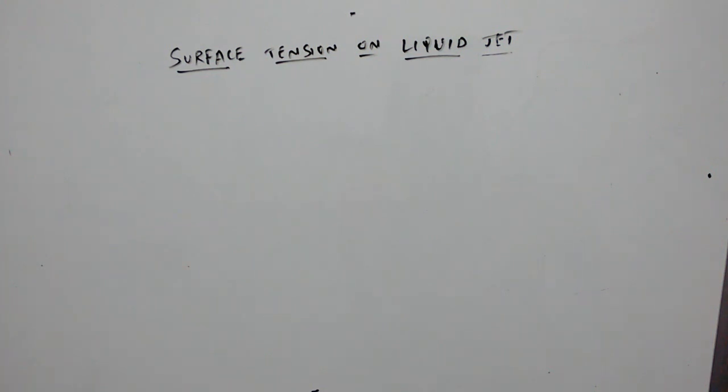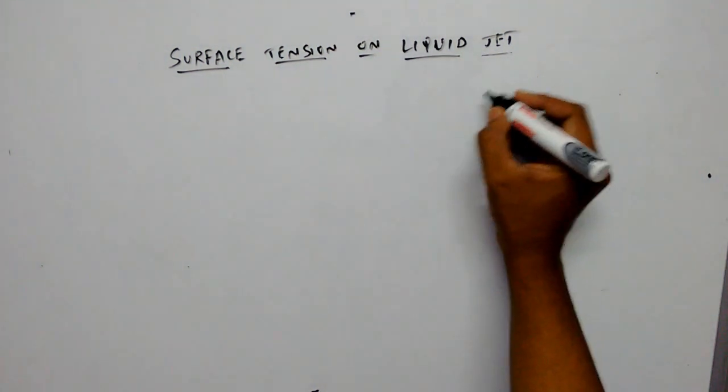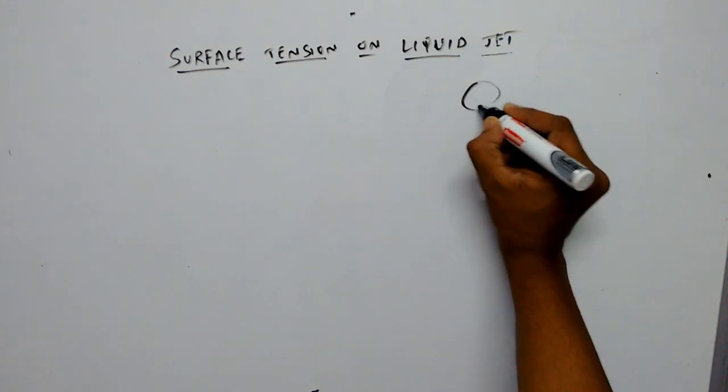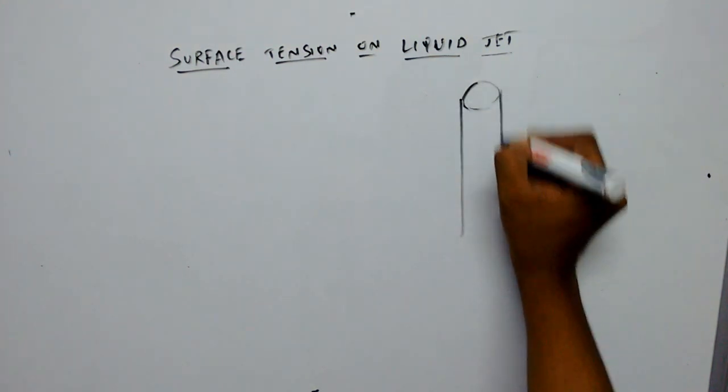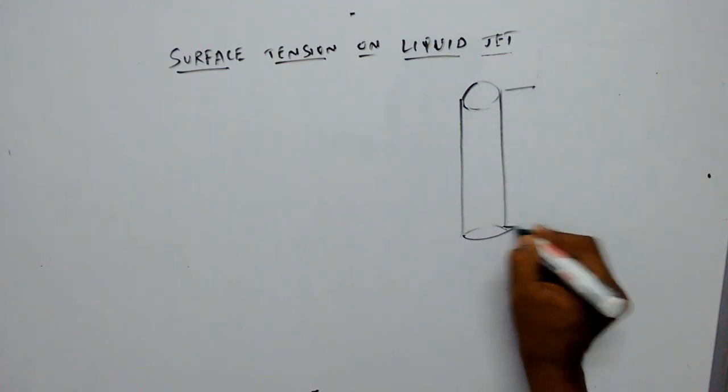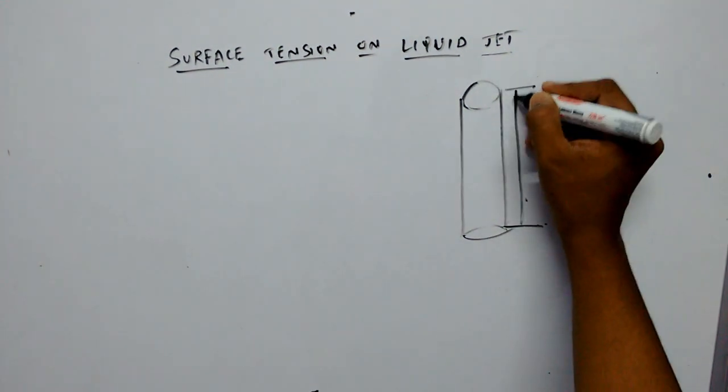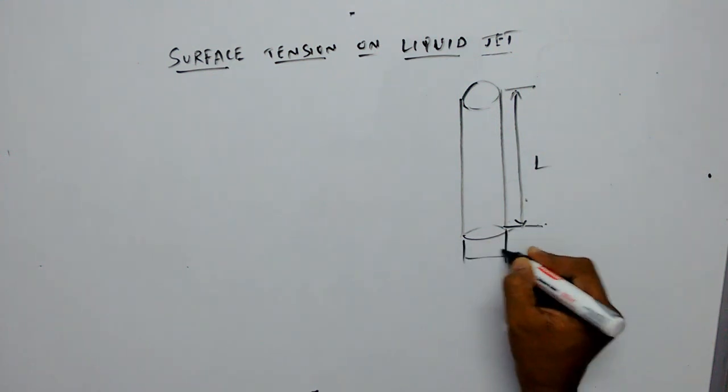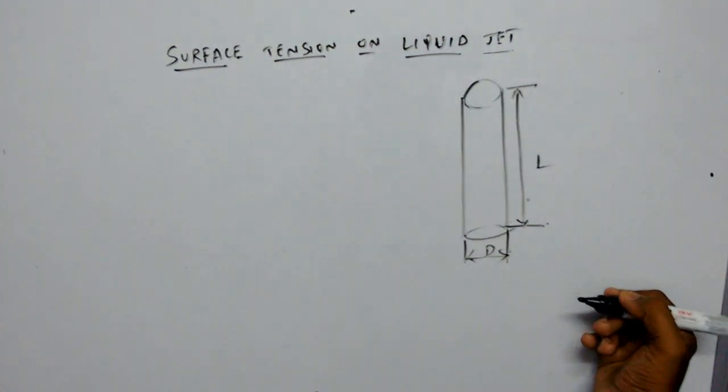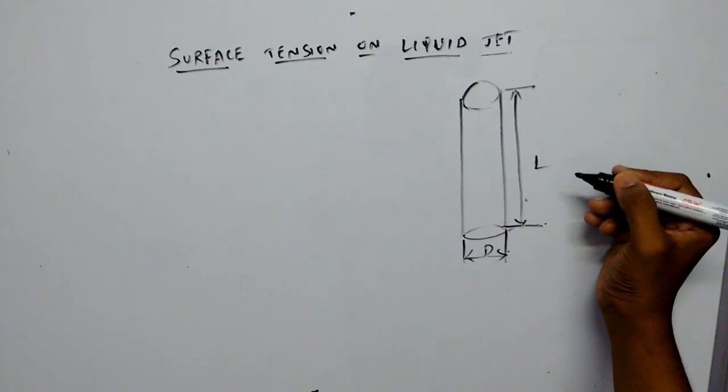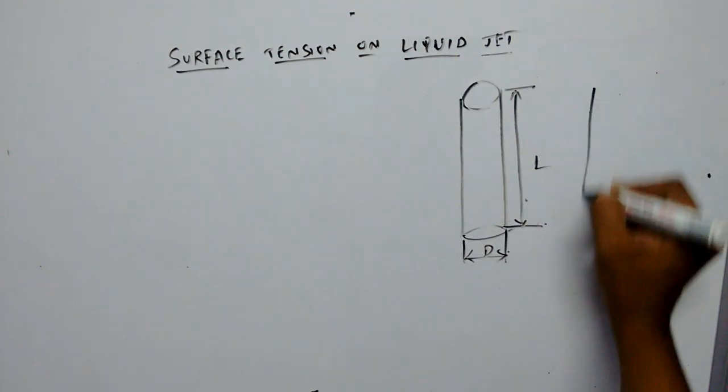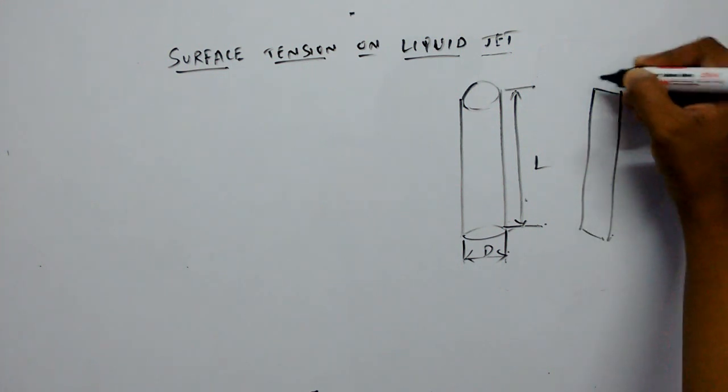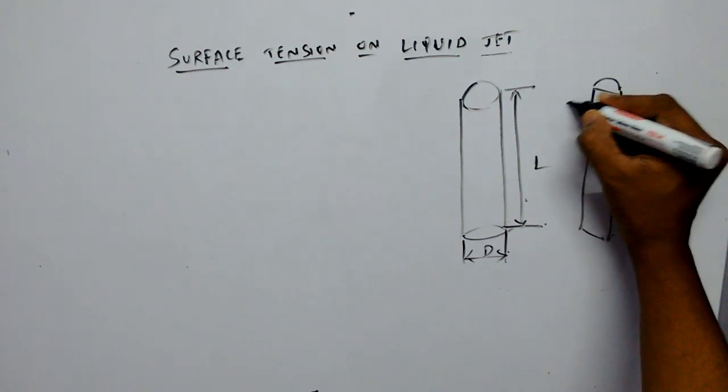Let us consider a liquid jet whose length is L and diameter is D. If you cut this liquid jet, you will get a cross section like this. Let sigma be the surface tension acting on length L.